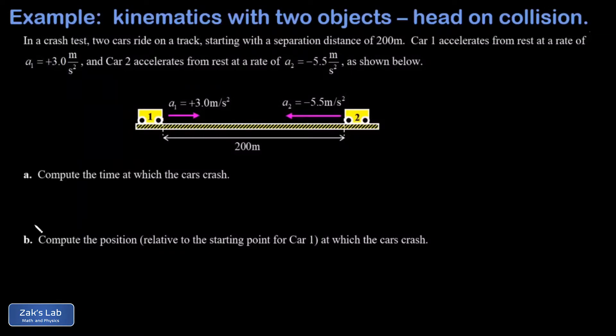In this video we're looking at a one-dimensional kinematics problem where two objects are moving and interacting. I have car number one located at x equals zero, car number two located at x equals 200 meters. When the clock starts, both cars begin accelerating toward each other with differing accelerations. a1 is 3 meters per second squared, a2 is 5.5 meters per second squared in magnitude, but it points to the left so I put a minus sign on it.